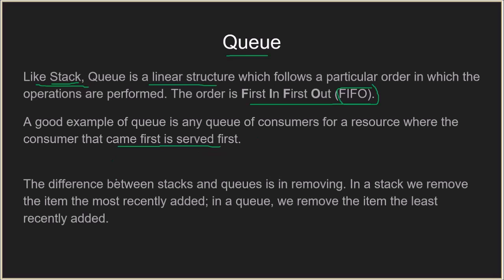The difference between stacks and queues is in removing elements. In both stacks and queues the push operation is basically the same, but the difference comes in removing elements. In stacks you remove the last element which has just come in, whereas in queues you remove the first element which came in — so it is actually the opposite. In a stack we remove the item that is most recently added, and in a queue we remove the item that is least recently added.